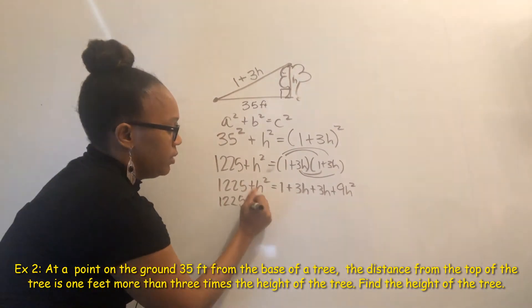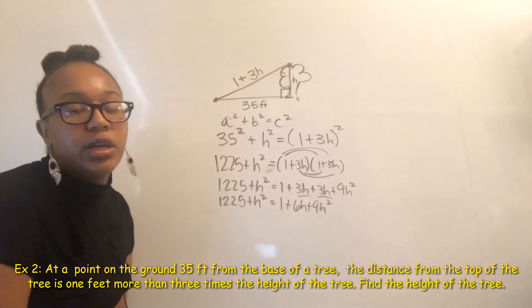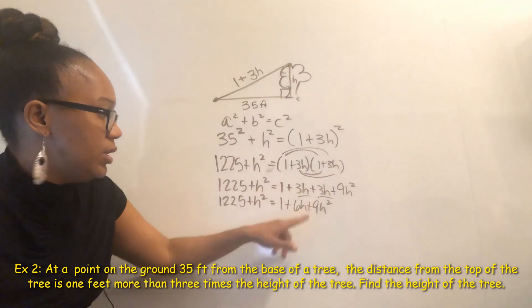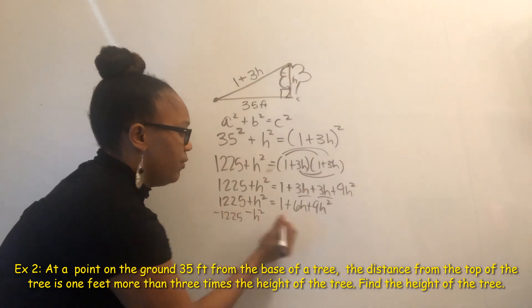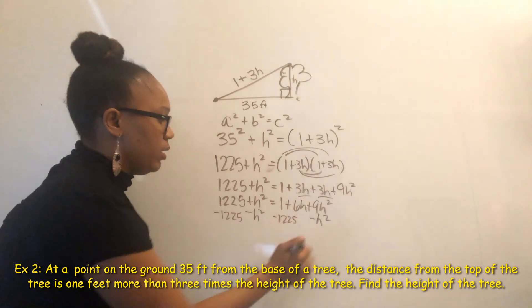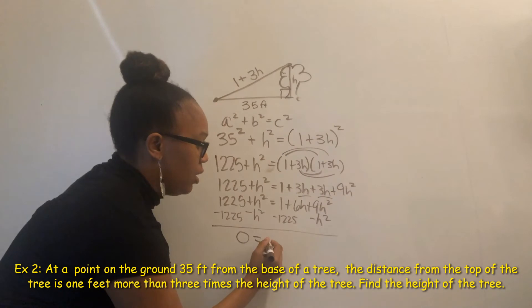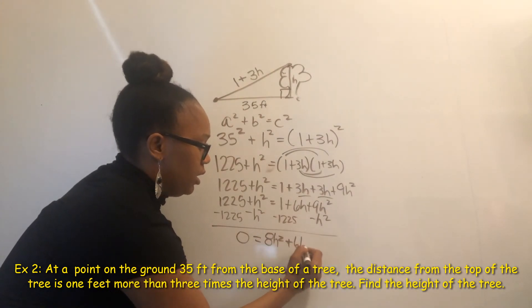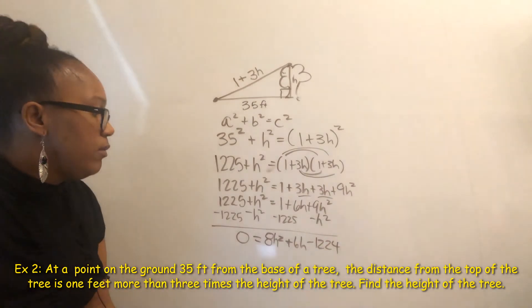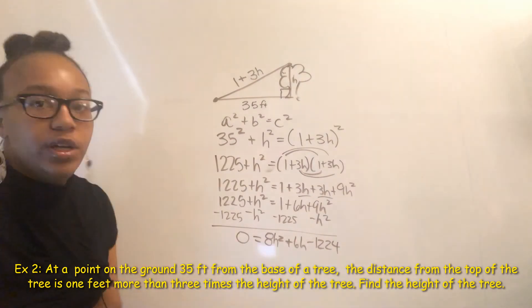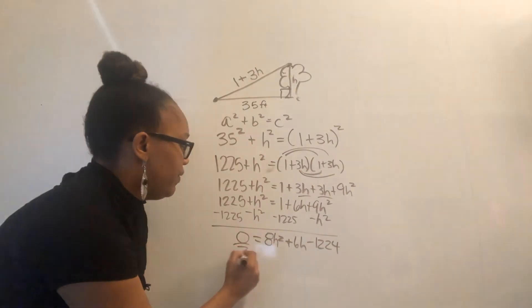Combining like terms, the two three H terms give six H. So we have 1225 plus H squared equals nine H squared plus six H plus one. This is a quadratic equation — the highest exponent is two — so we need zero on one side. Moving H squared and 1225 to the other side: nine H squared minus one H squared gives eight H squared, plus six H, and one minus 1225 gives negative 1224. Two divides into all terms, so divide by two to simplify.